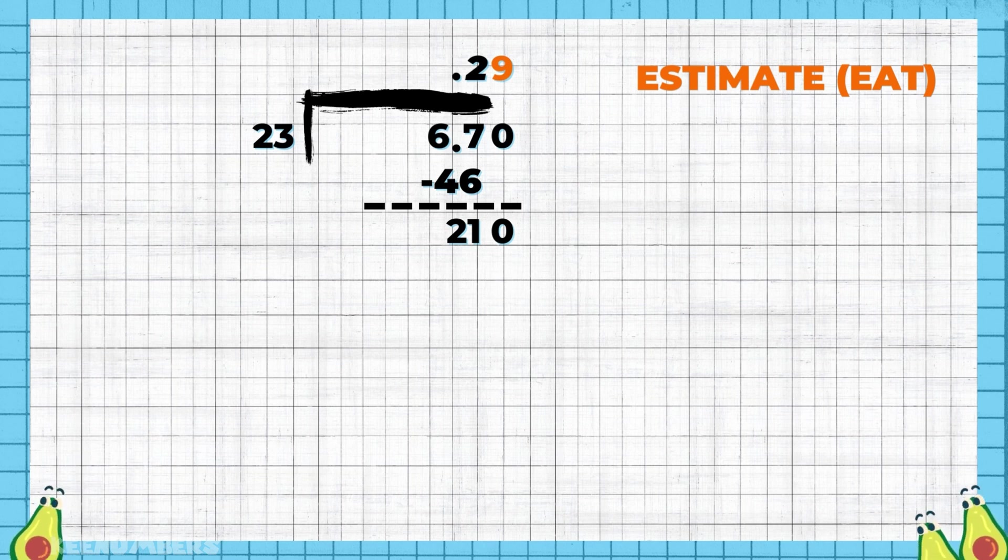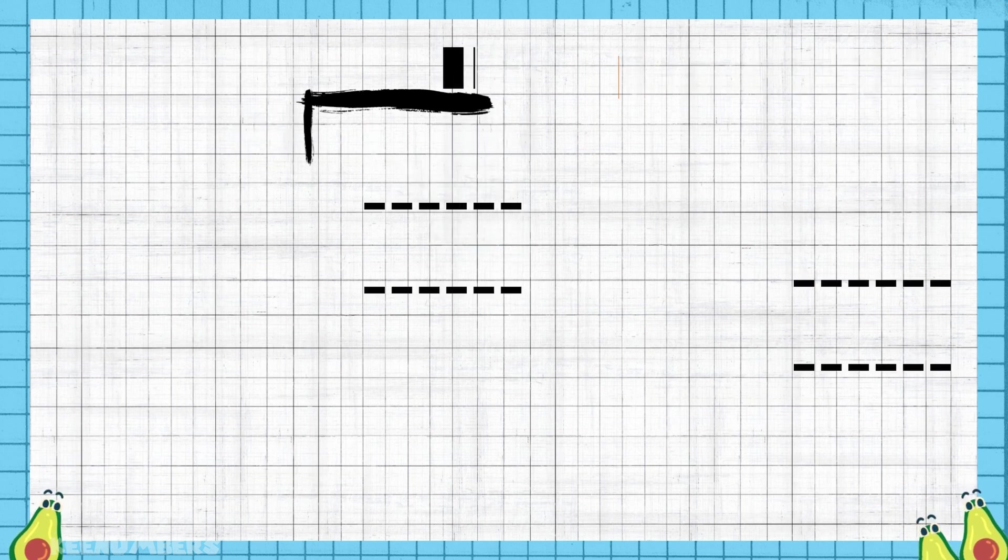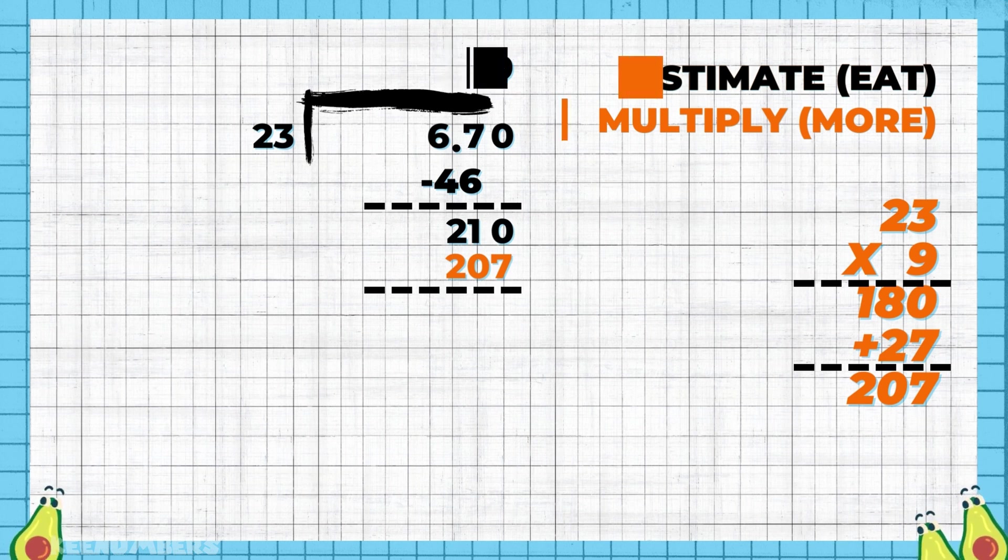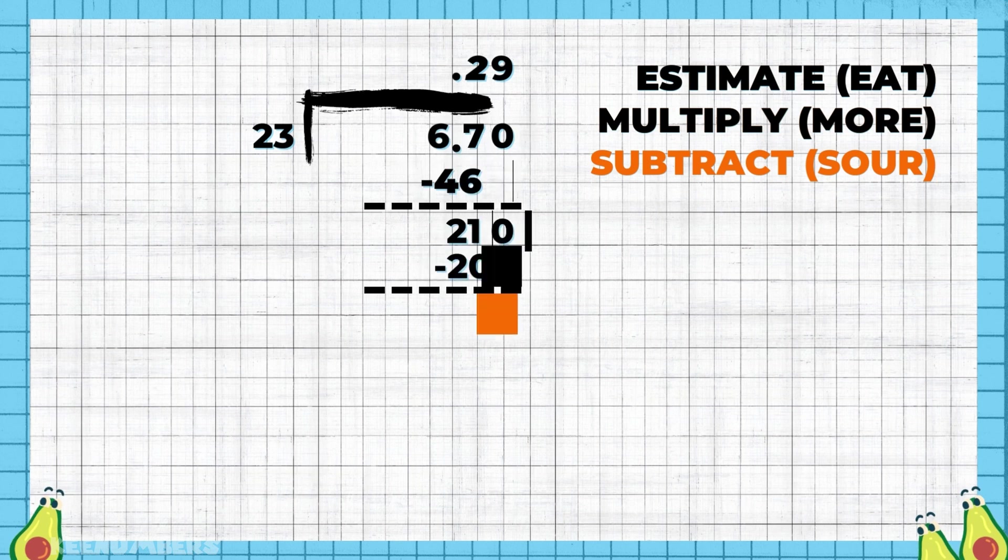I think 23 is going to go into 210 a whopping 9 times, so let's verify that by multiplying it out. 23 by 9, that's 180 plus 27, or 207. Yeah, that works because that's less than 210. So you're going to subtract - that's the sour step. The difference between 210 and 207 is 3.